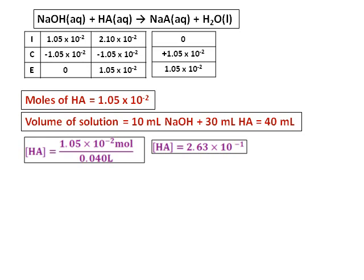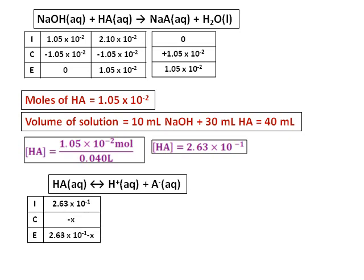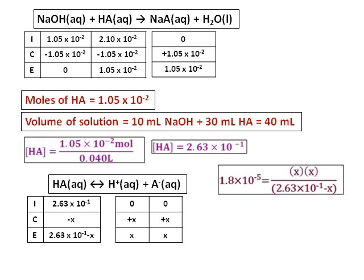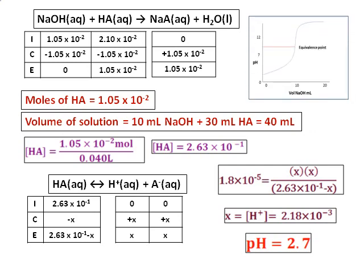To calculate the pH, I need the hydrogen ion concentration, which comes from the acid only. We write the ionization of the acid and set up the ICE table. The Ka of the acid is given, and we calculate the value of X, which is the hydrogen ion concentration. From that, the pH is calculated to be 2.7. So the pH somewhere in the middle before the equivalence point is 2.7. Comparing with the titration curves we learned earlier, you can see that the pH will always be lower than 7 somewhere in the middle.